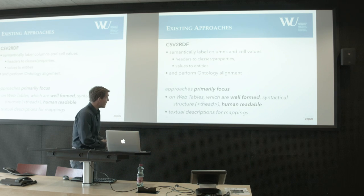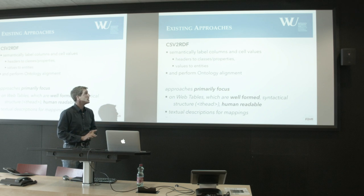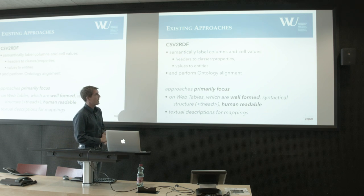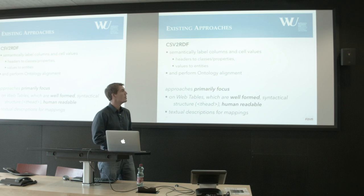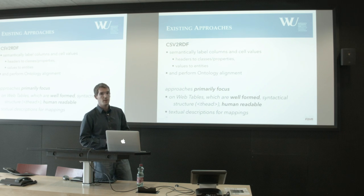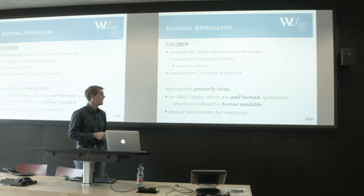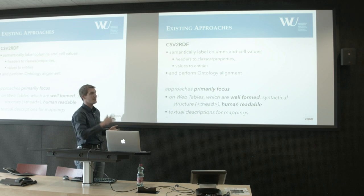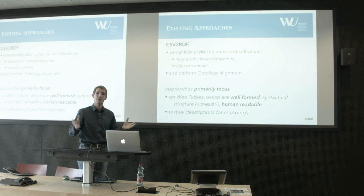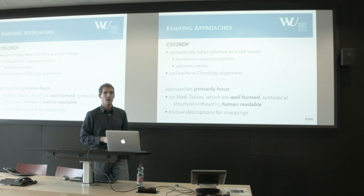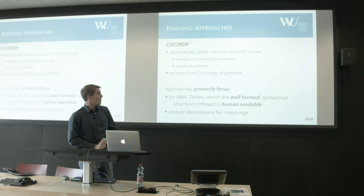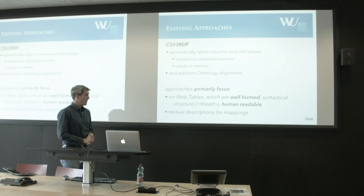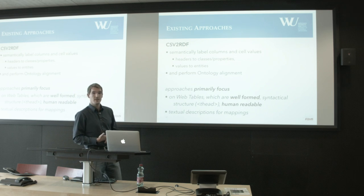What are existing approaches doing for this? They do labeling where you normally use the header labels to map to classes and properties, and use the cell content to get entities out of it. Then you do some kind of ontology alignment to figure out the model behind these types.